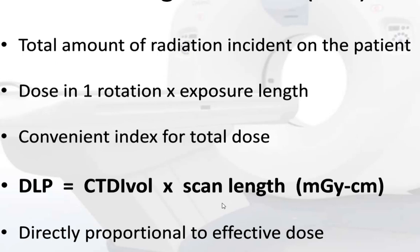Another important measurement of CT dose is DLP, the Dose Length Product. It is the total amount of radiation incident on the patient — dose in one rotation times exposure length. It is a convenient index for total dose. DLP equals CTDI volume times scan length, in milligray-centimeters, and it is directly proportional to effective dose.